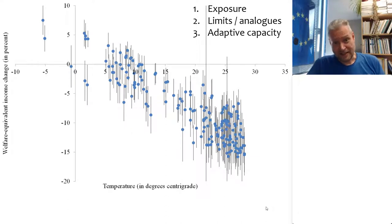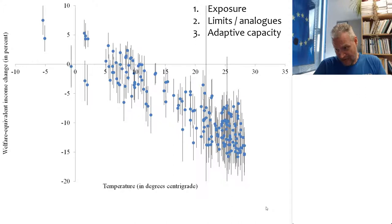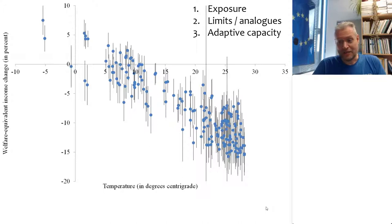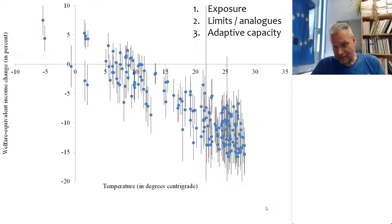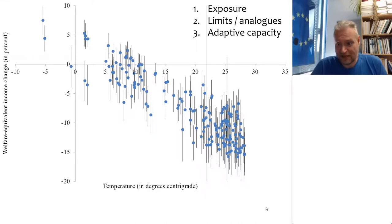You can also plot these data against current temperature, now on the horizontal axis. What you see is that hotter countries tend to have more negative impacts of climate change, whereas colder countries have more positive or smaller negative impacts.